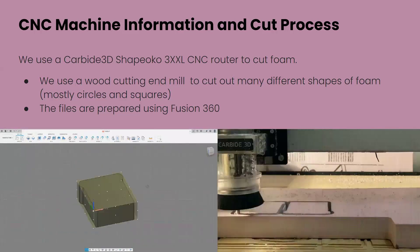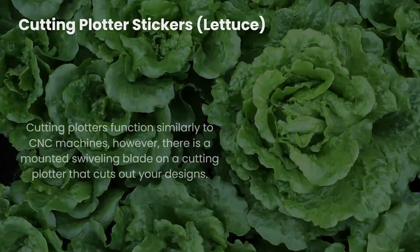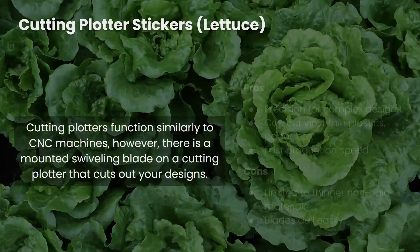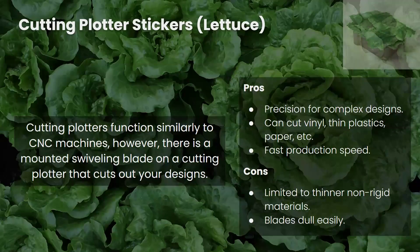The next process is the manufacturing of stickers. This is more of our artistic interpretation — it's not supposed to actually look like lettuce, it's sort of the idea of lettuce, as you can see in the top right. We use a machine called a cutting plotter, which functions similarly to CNC in that it interprets positional code and cuts accordingly. It's very useful for very thin, flat objects where you need high precision.